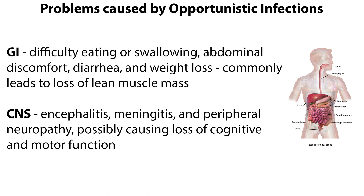Numerous GI problems are associated with opportunistic infections and antiretroviral therapy, including difficulty eating or swallowing, abdominal discomfort, diarrhea and weight loss, which commonly leads to loss of lean muscle mass. Many opportunistic infections affect the central nervous system, including encephalitis, meningitis, and peripheral neuropathy, possibly causing loss of cognitive and motor function.